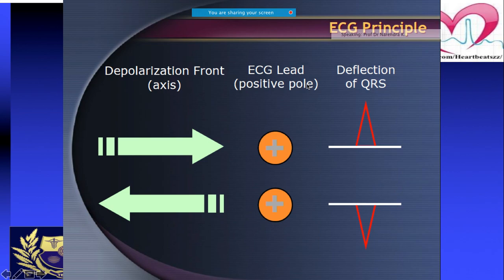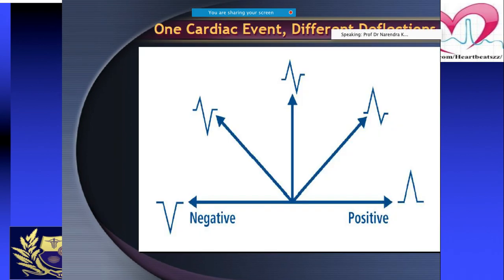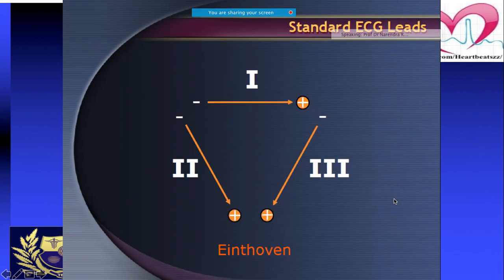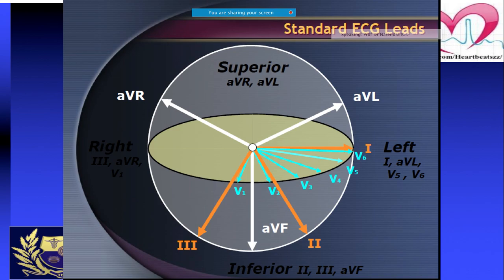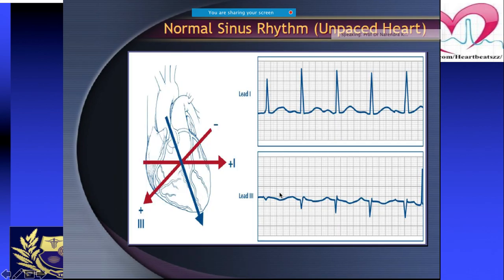Always remember Einthoven's triangle — lead 1, lead 2, and lead 3. Surface ECG leads V1 to V6 and how they are placed, along with AVL, AVR, and AVF. This is normal sinus rhythm. The RV directional depolarization vector goes in one direction; the LV goes towards the opposite and slightly inferior; with biventricular pacing it shifts further.